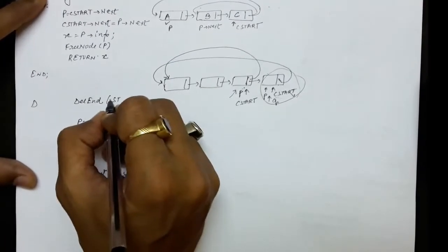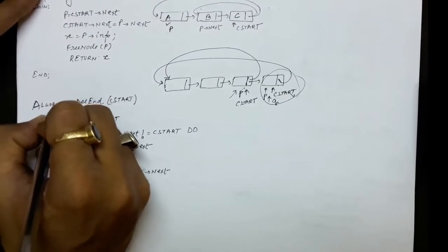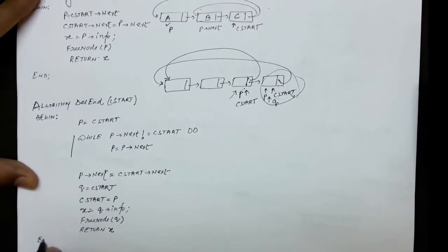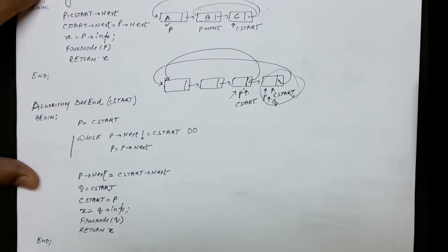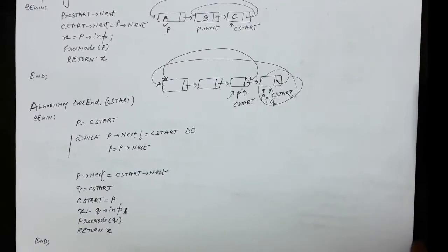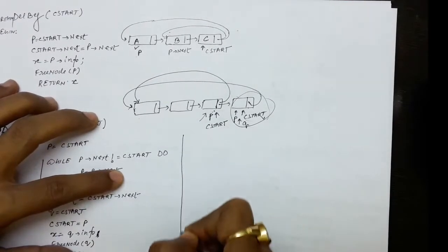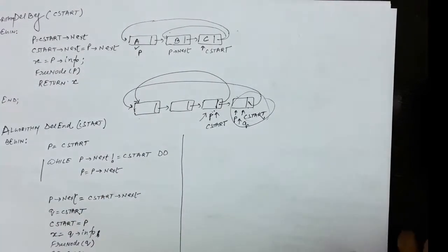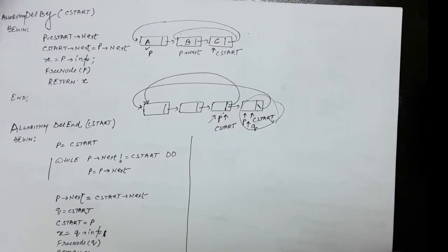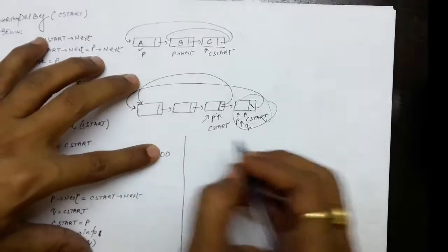This is the delete end function for the circular linked list. The delete after operation is very similar to that of the linear linked list. You can watch the linear linked list video for that — the delete after operation is the same, so I am skipping it here.